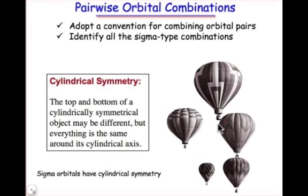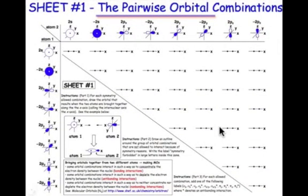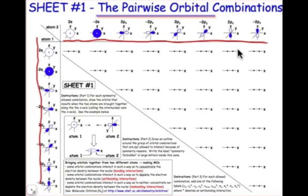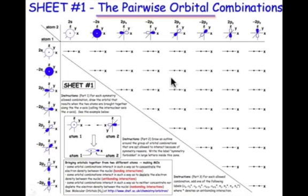If you take a look at Sheet 1, basically what you're going to find on Sheet 1 is a set of atomic orbitals, first on the left-hand column for atom 1, and then on the right-hand column, those same orbitals are listed, but they're coming from atom 2. What we're going to do in the next several slides and in the following webcasts is to look at combinations of these.